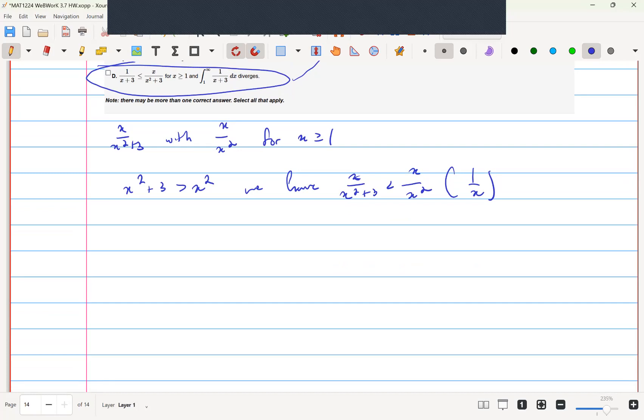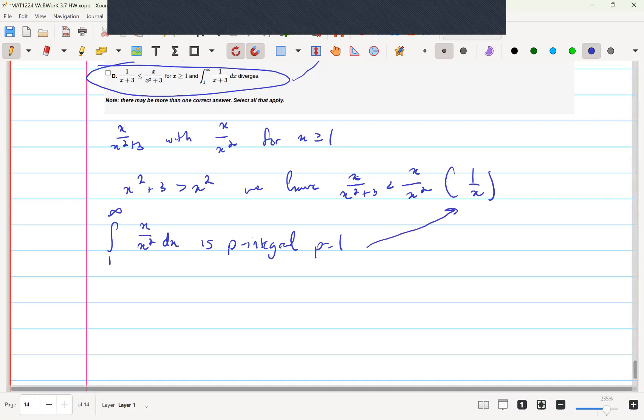Which means now we need to find the integral from 1 to infinity. x over x squared dx is a p integral where p equals 1, and this is known to diverge for p less than or equal to 1.